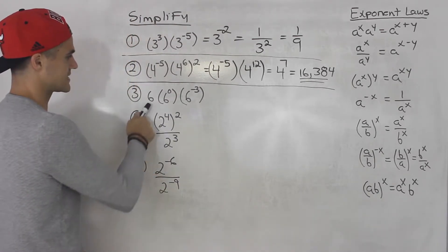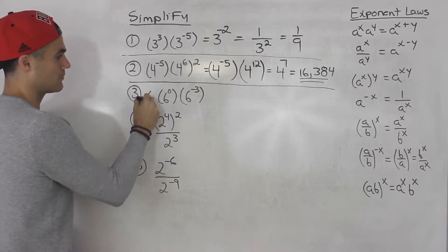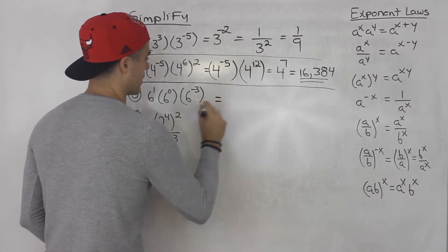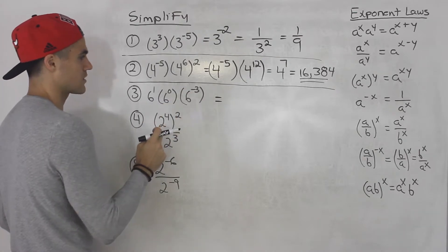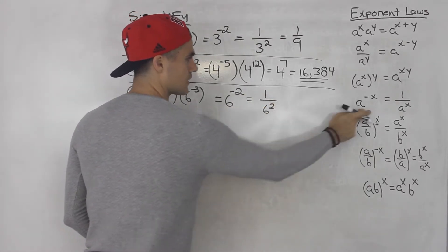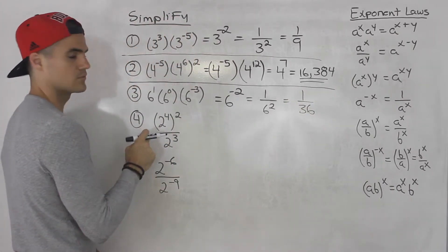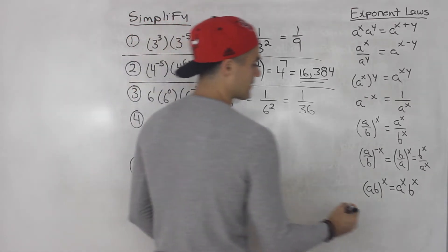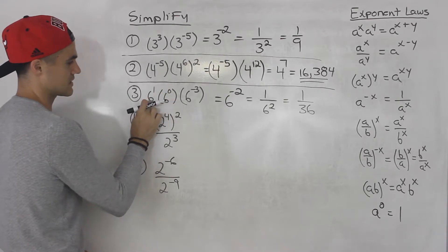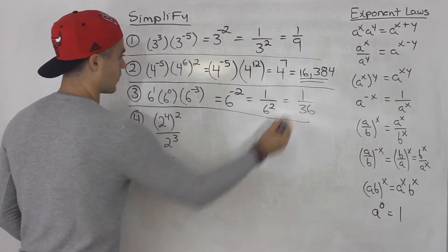Moving on to number three: we got six times six to the power of zero times six to the negative three. Notice the six is by itself with no exponent — when a number is by itself it's always to the exponent one. So we have six to the one, six to the zero, six to the negative three, and we can add all these exponents: one plus zero plus negative three gives us negative two, which is one over six squared, so that's one over 36. Also remember, anything to the power of zero is equal to one, so we could have just ignored that term. Either way, the answer is one over 36.